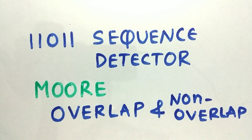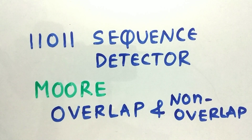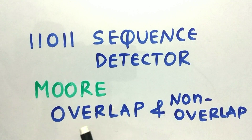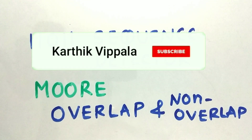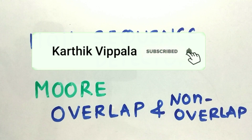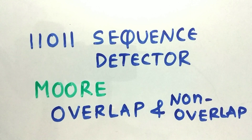Hey guys, welcome back to another interesting topic. Today's topic is on 11011 sequence detection using Moore machine — overlap and non-overlap. Before going to the topic, make sure to hit that subscribe button and turn your notifications on, and if you have any doubts, comment down below and I'll respond within 24 hours.